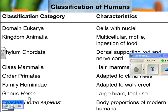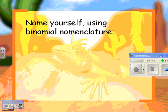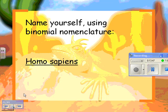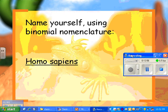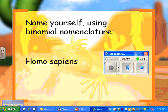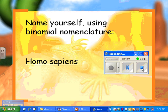When I ask you to name yourself using binomial nomenclature — you have to do this on your quiz — you need to write Homo sapiens. Make sure H is capitalized, make sure the whole thing is underlined, and that nothing else is capitalized. Write it clearly; it seems a little picky, but it's actually really important.